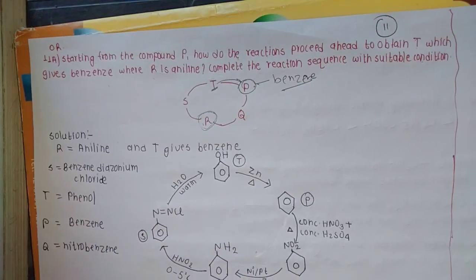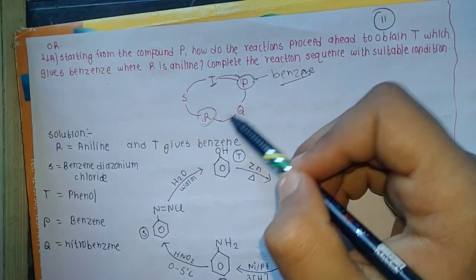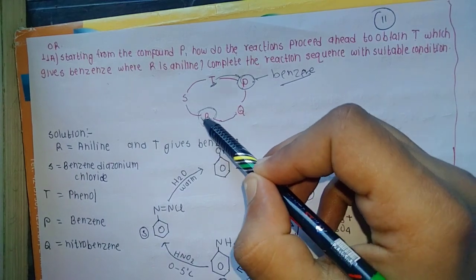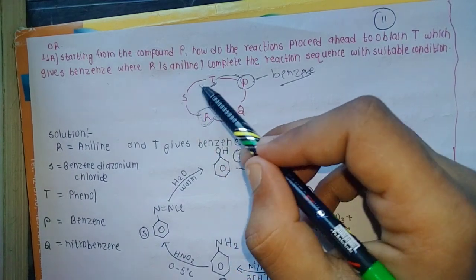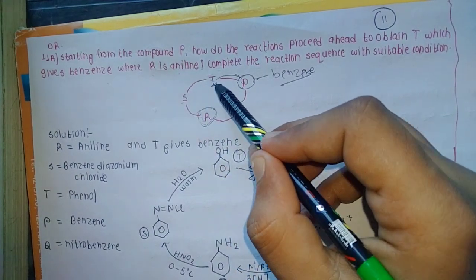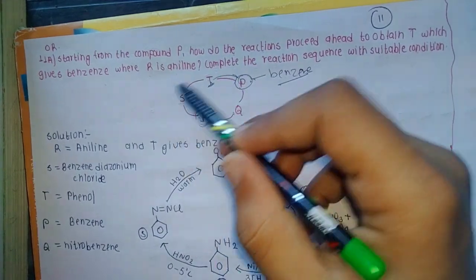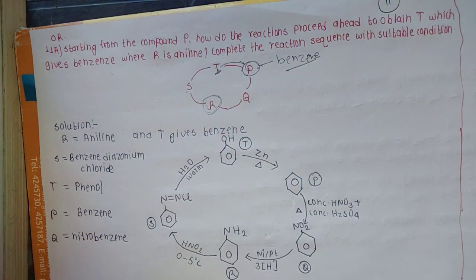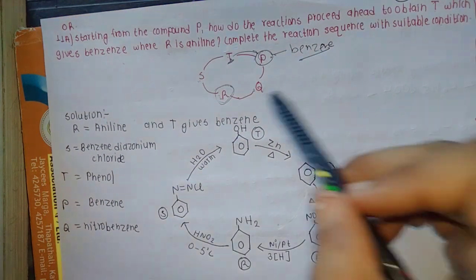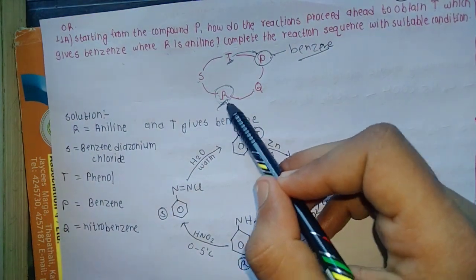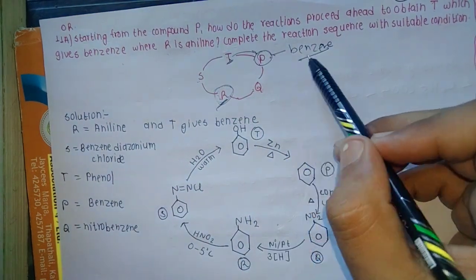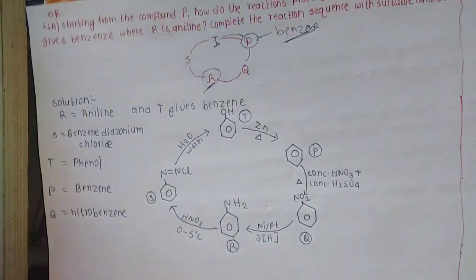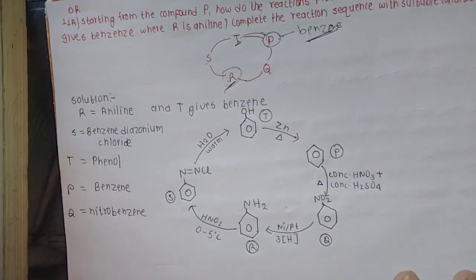If we have to solve the question, the sequence is P, Q, R, S, T. When R is aniline and P is benzene, we need to find the full reaction sequence. R will start with aniline.